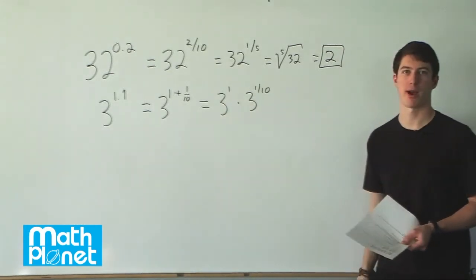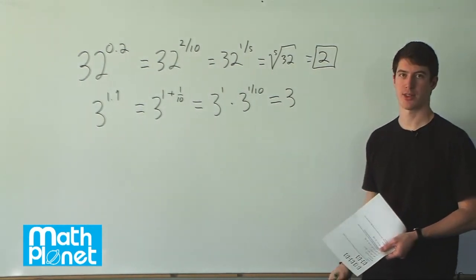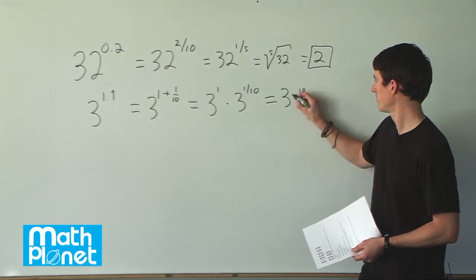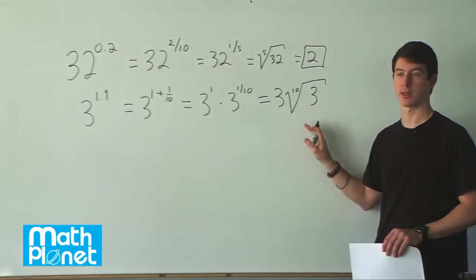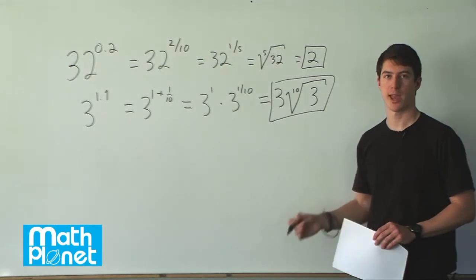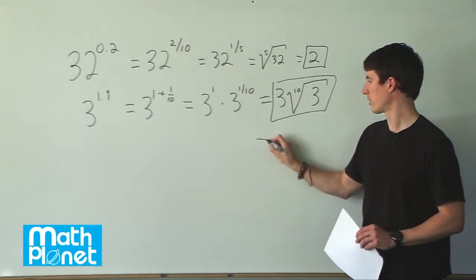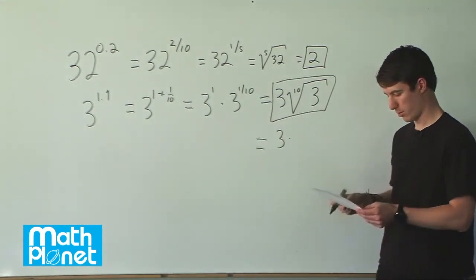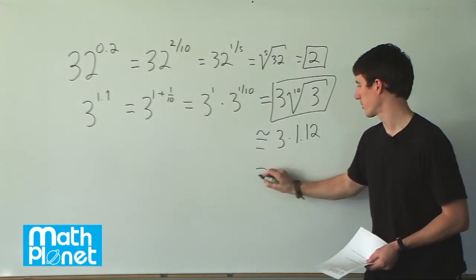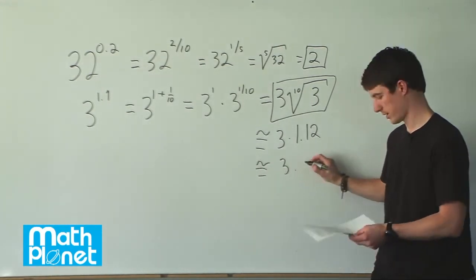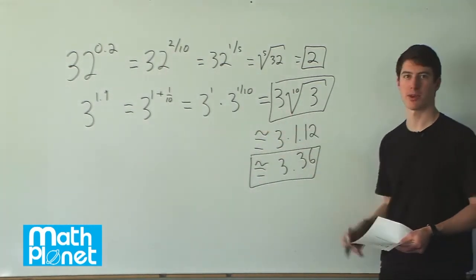This is already easy. 3 to the power of 1 is of course 3. And then we can say 3 to the power of 1 tenth is the tenth root of 3. From here, we can't solve for this exactly — this is as exact as we can solve for this problem. We can find the approximate answer by taking the tenth root with a calculator. So if we say this is 3 times 1.12, the approximate answer is just going to be 3.36.